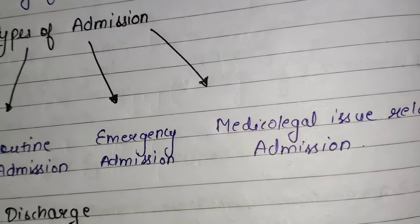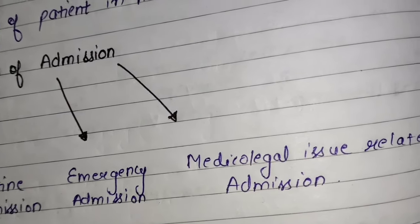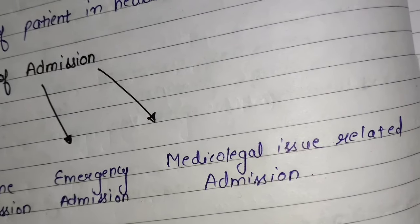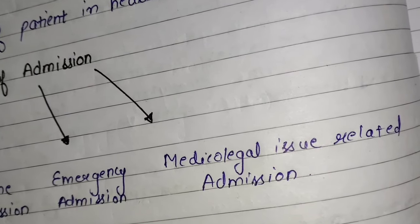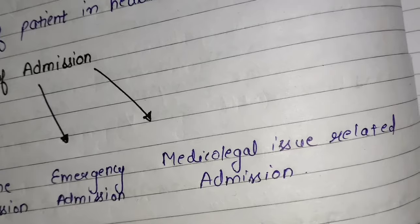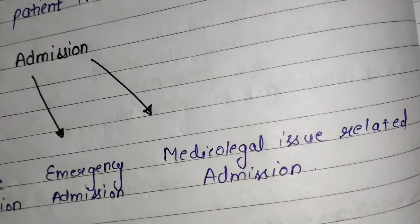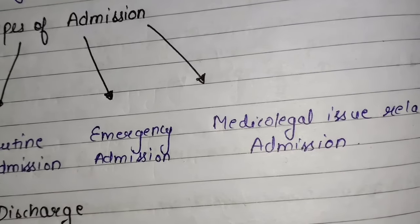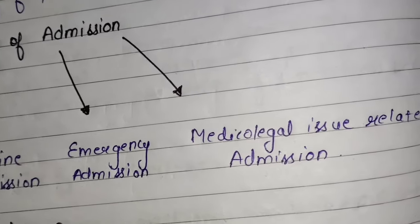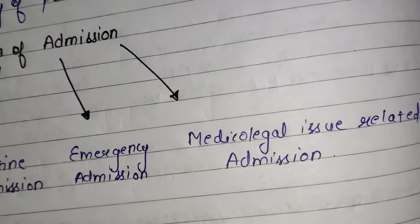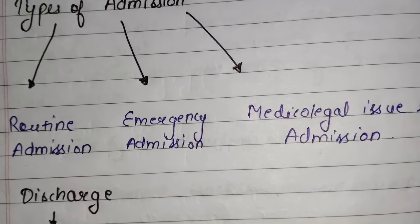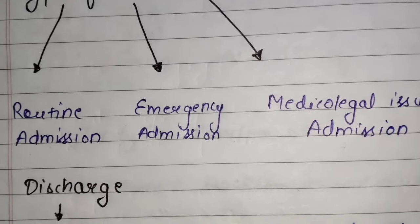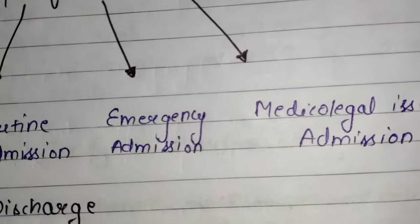Next is emergency admission. Emergency admission mein jo patient hotta hai — jaise sudden illness ho gayi, injury ho gayi, koi accident ho gaya, burn ho gaya, heart attack ho gaya, poisoning ho gaya — unka admission kiya jata hai hospital ke andar aur unko treatment provide kiya jata hai. Emergency admission pahle se planned nahi hota, but routine admission pre-planned hota hai.